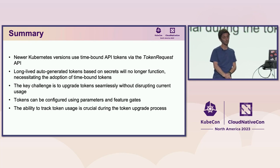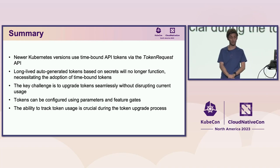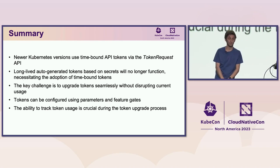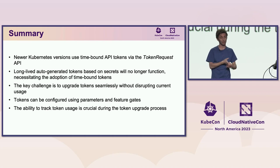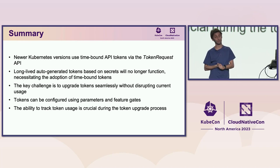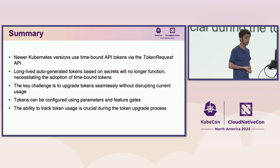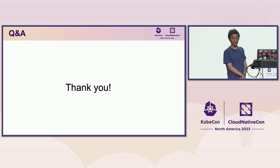To summarize: newer Kubernetes versions are using time-bound tokens via the token request API. The kubelet does this for you by default, and the API server makes sure your pods get these credentials if they need them. We're gradually moving away from long-lived auto-generated tokens, and this is going to be a long migration for most of us depending on the type of workloads you run. Tracking is key — monitoring all these things, communication, and feedback loops on how effective your communication is. There are a lot of feature gates, a lot of options, and a lot of parameters, and it's important to get familiar with them. We've had quite a lot of people helping along the way, and thank you very much for attending the talk.